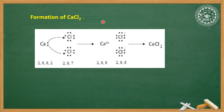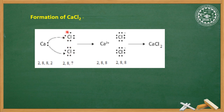Now we will discuss the formation of calcium chloride. Calcium has atomic number 20 with electronic configuration 2, 8, 8, 2 — its outermost shell has two electrons, making it unstable. Chlorine has atomic number 17 with electronic configuration 2, 8, 7 — also unstable. Calcium donates two electrons, one to each chlorine atom, losing two electrons and becoming stable with configuration 2, 8, 8, acquiring two positive charges.